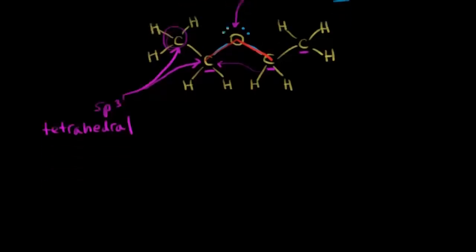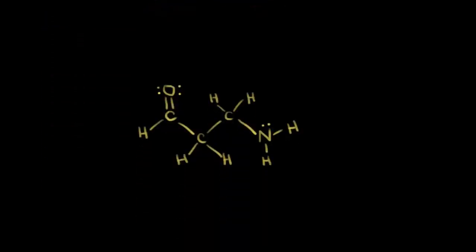Let's do one more example. Our goal again is to find hybridization states and geometries for all atoms except hydrogen. Starting with this carbon: there is one double bond to that carbon, so it must be sp2 hybridized, and therefore the geometry is trigonal planar.